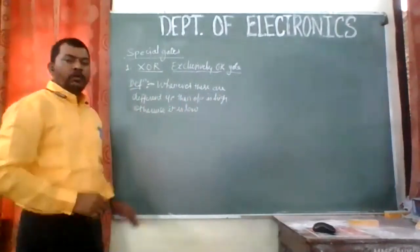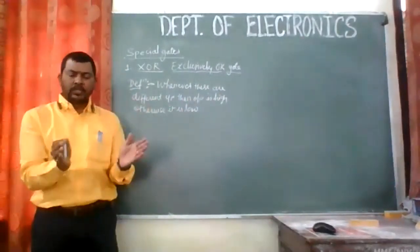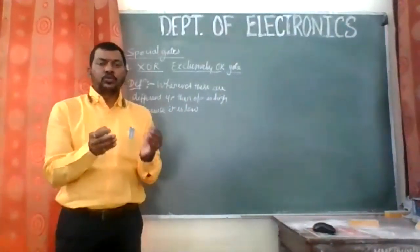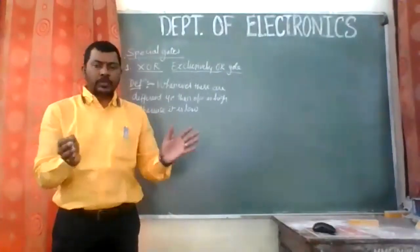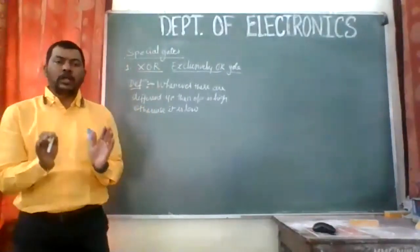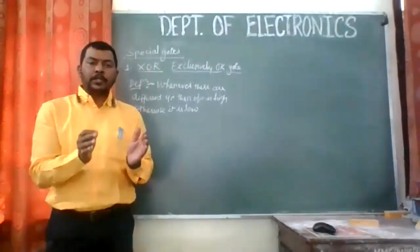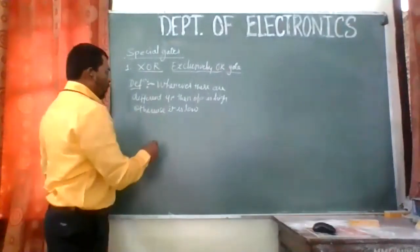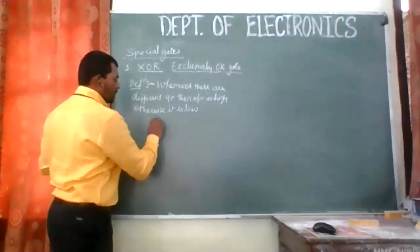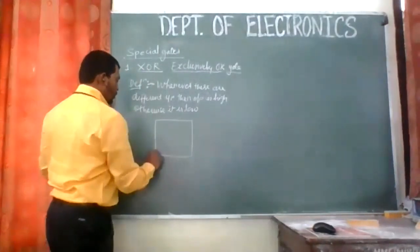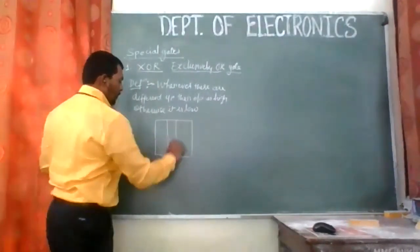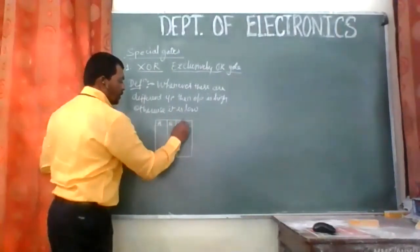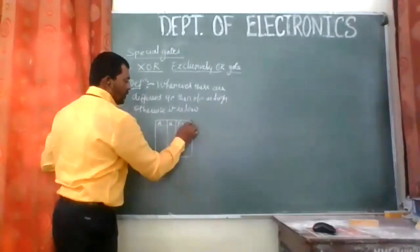What this actually means: we are expecting the gate to have two inputs and one output, as we have studied up till now. The probability in which we are expected to give the inputs are zeros and ones. If I draw the truth table, A and B are the inputs, and Y is supposed to be the output.